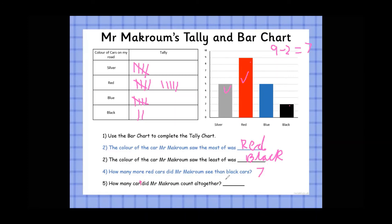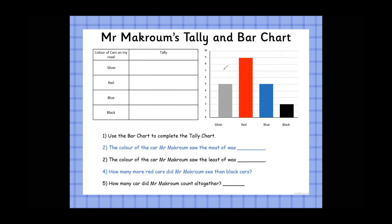Last question: how many cars did Mr Macram count altogether? We have 5, 9, 5, and 2. Five and five make a number bond to ten, then 9 plus 2: nine plus one gives us ten, plus one more makes eleven. So altogether Mr Macram counted 21 cars. A really good habit is to write the totals above each bar as soon as you see a bar chart, after checking the scale.